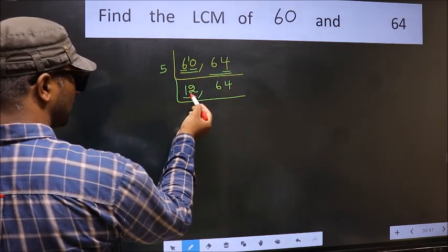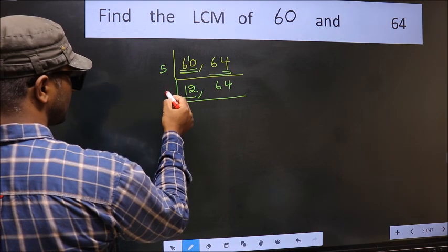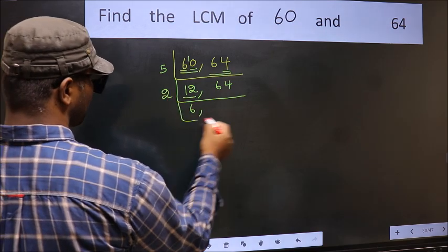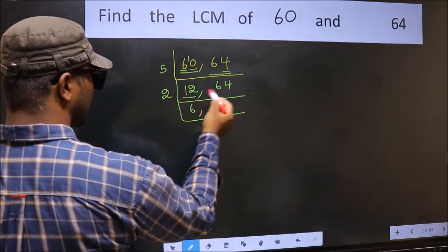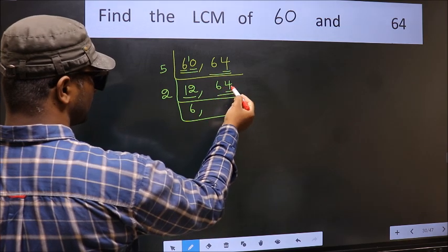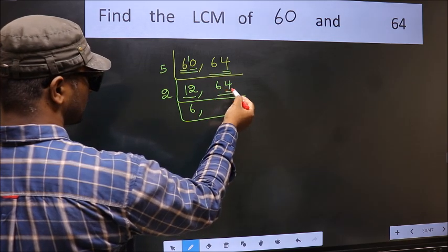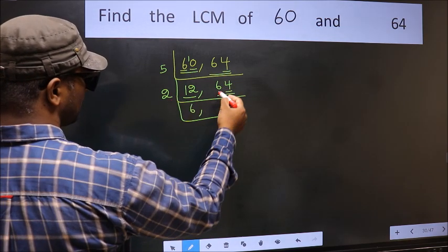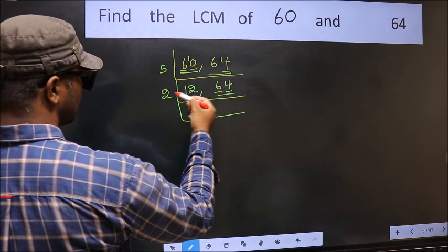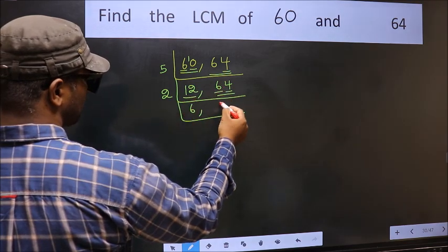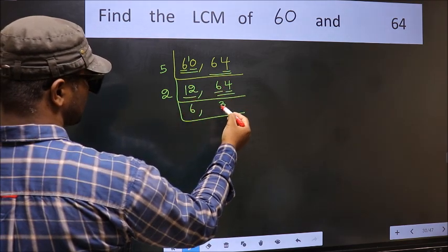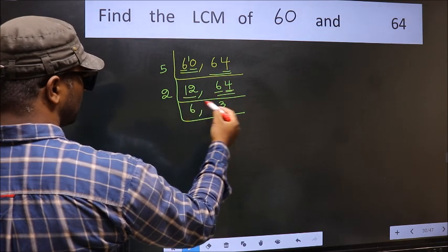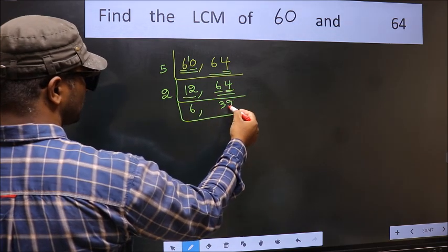Now here we have 12. 12 divided by 2: 2, 6 is 12. The other number is 64 — last digit is 4, so this is divisible by 2. The first number: when do we get 6 in the 2 table? 2 threes are 6. The other number 4: when do we get 4 in the 2 table? 2 twos are 4.